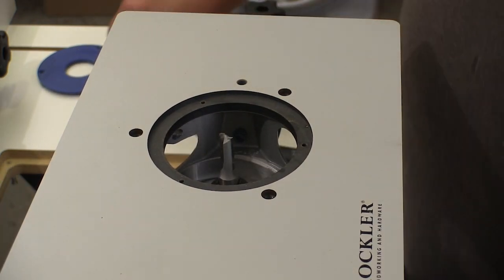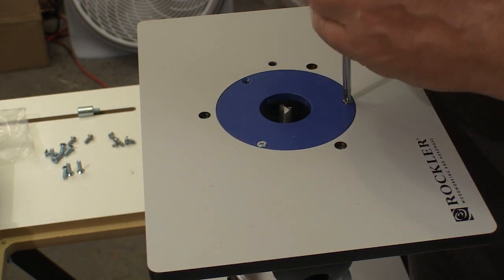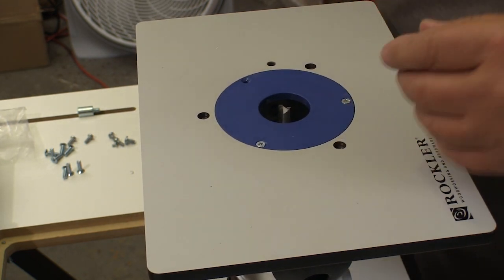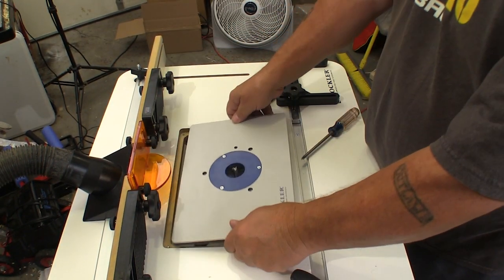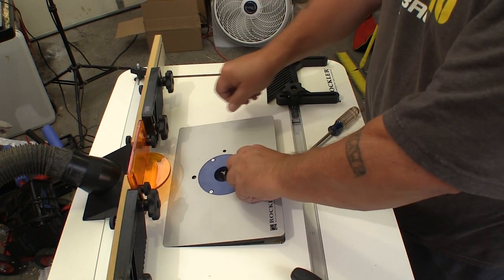We're going to be using a small enough bit, so I'm going to install the included insert plate. Then we can go ahead and set the plate and the router into the opening and check again to be sure that the plate is still flush with the surface.